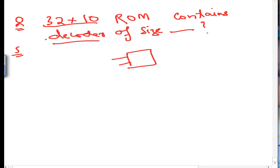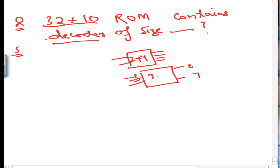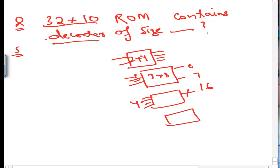If we have a 2-input decoder, we get 2 raised to power 2, that is 4 output lines — so this is a 2×4 decoder. If we have 3 input lines, 2 to the power 3 is 8 output lines, giving a 3×8 decoder. With 4 input lines, 2 to the power 4 is 16 output lines. With 5 input lines, 2 raised to power 5 is 32 output lines.